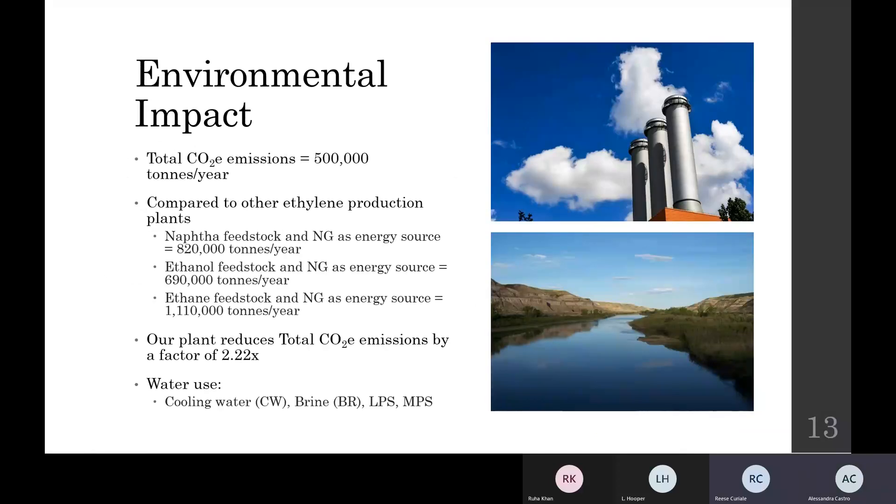The total carbon dioxide equivalent emissions produced from our plant is 500,000 tons per year, with most of our emissions coming from our furnace and caustic scrubber. Our total emissions is much lower compared to ethylene plants using feedstocks such as naphtha and ethanol, and is even 2.22 times lower than other plants using ethane as feedstock. Water usage includes sources from a river as cooling water, and using brine water in low- and medium-pressure steam.